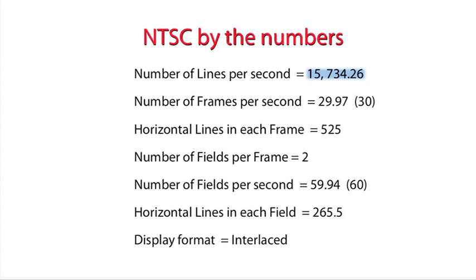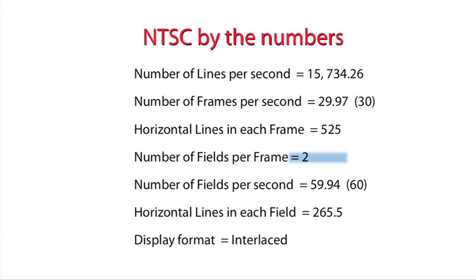The very first line tells us that there are 15,734.26 horizontal lines per second and that there are 29.97 or 30 frames per second, and that each of those frames consists of 525 lines. Frames are broken into two halves or fields, and each field carries half the lines.